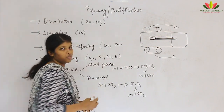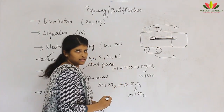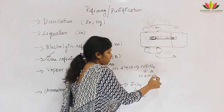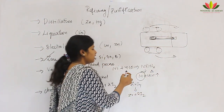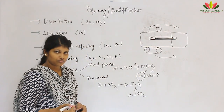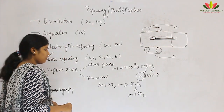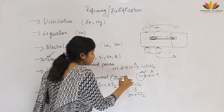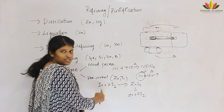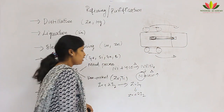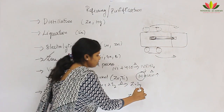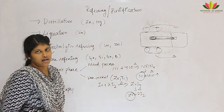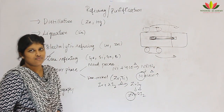In the Mond process, nickel is treated with carbon monoxide to form nickel tetracarbonyl, which is then heated to decompose back to pure nickel with carbon monoxide released. In the Van Arkel method — used for zirconium and titanium — zirconium is treated with iodine to form zirconium iodide (the volatile compound), which on further heating decomposes to give pure zirconium with iodine gas liberated.